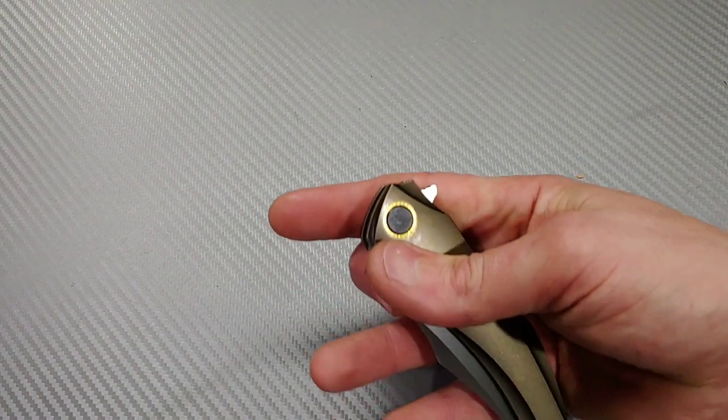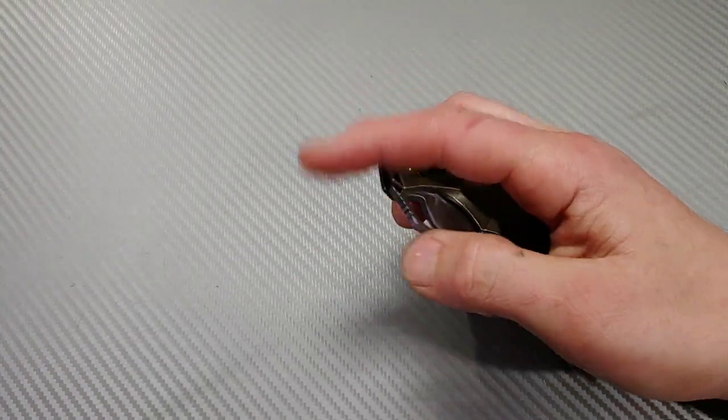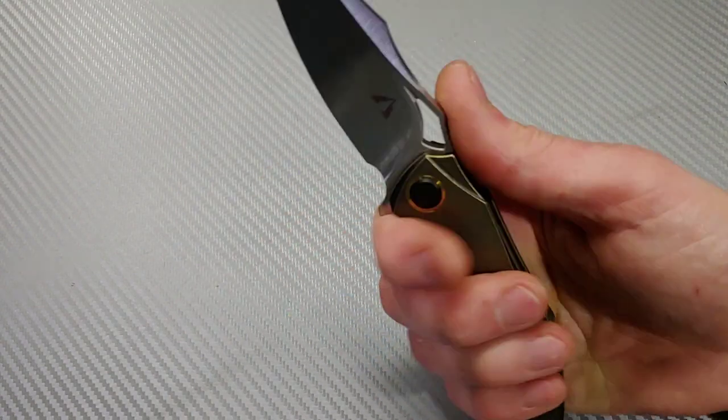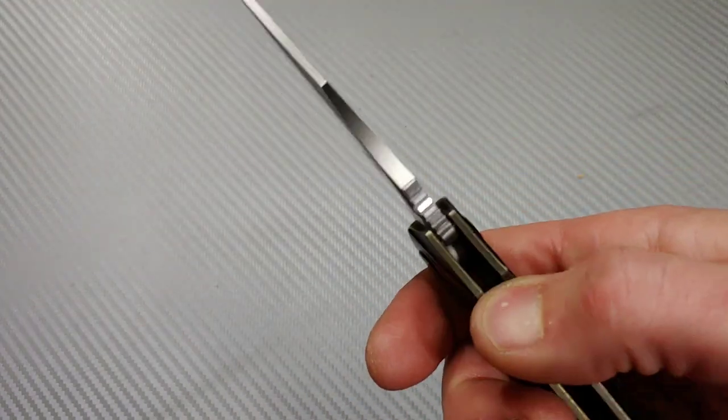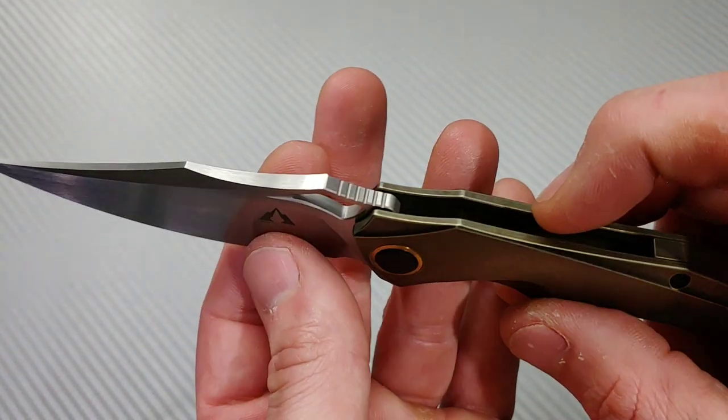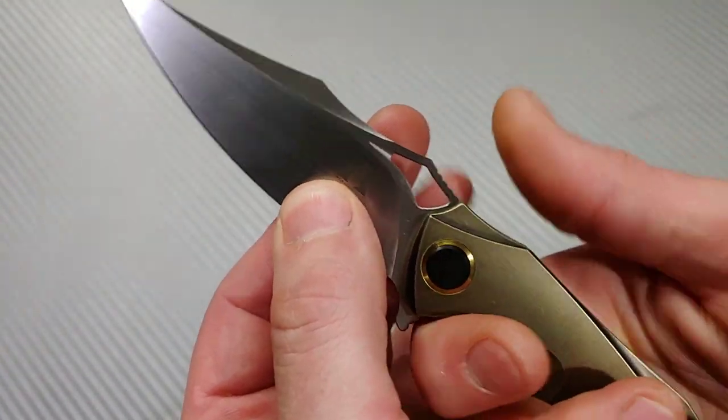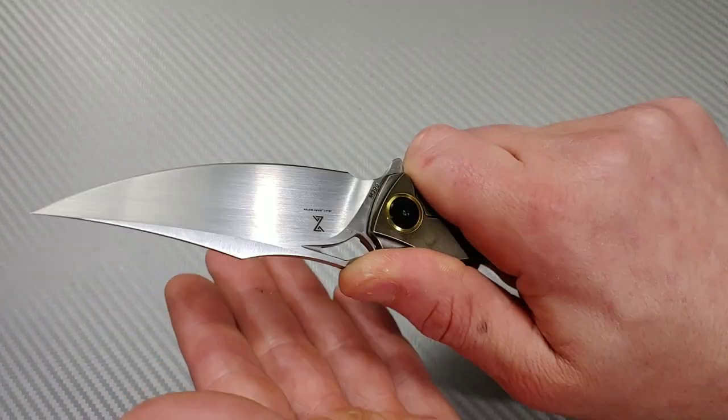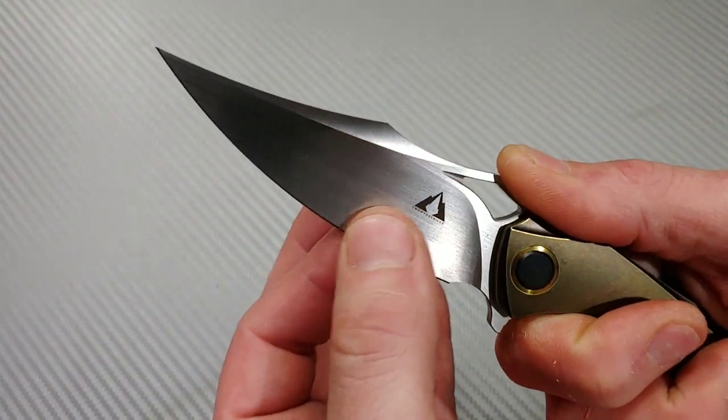Very smooth. Let's check out this hole. Oh yeah, that works good. The hole works great. Thumb flick, very easy to flick. Jimping on the spine right here, that is useful. This whole spot right here is just perfect for a thumb. I mean it really locks in. Good geometry.